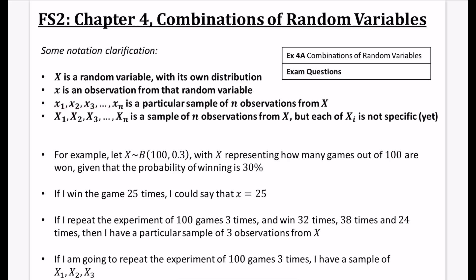If we have these lowercase ones with these little subscript numbers here, so I've got x1, x2, x3, all the way to xn, this is a particular sample of n observations from X, capital X in this case. So these lowercase ones are saying I've observed n different things as a sample from this part that we've got here.